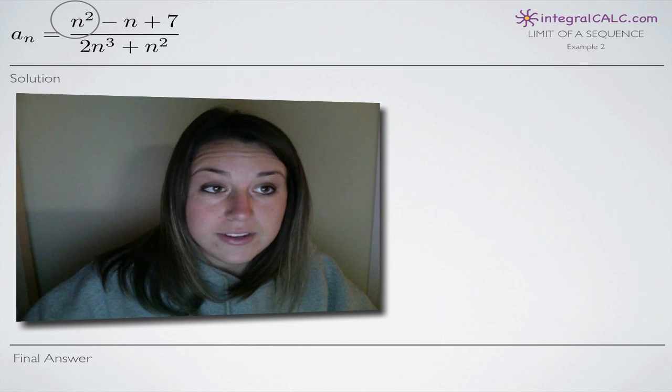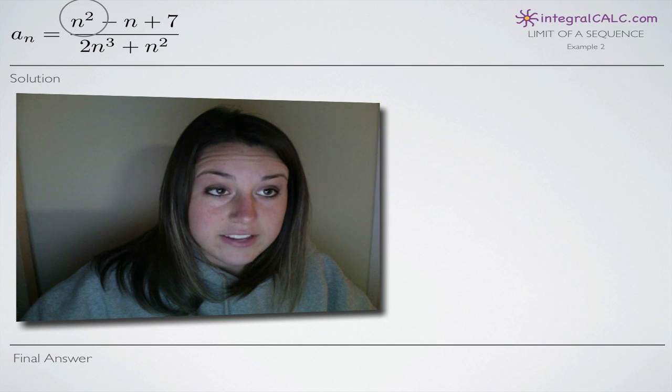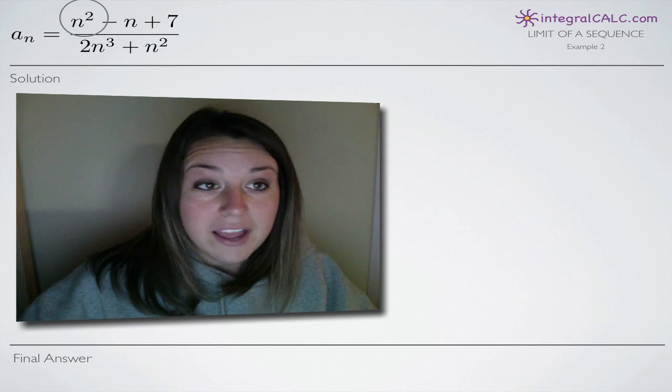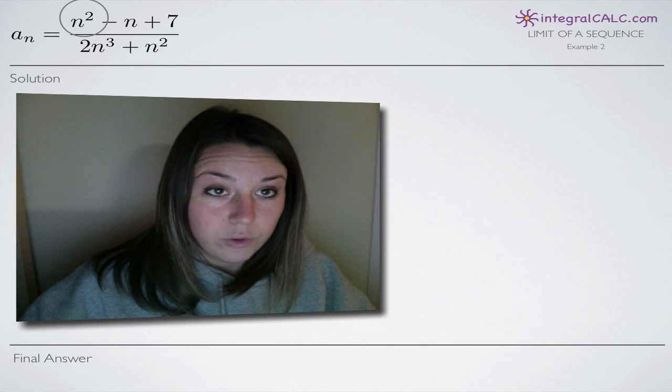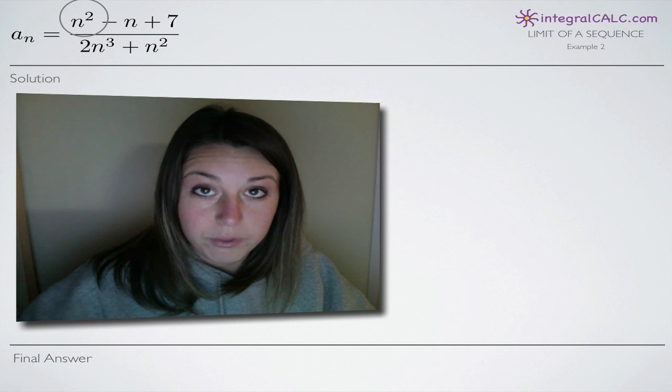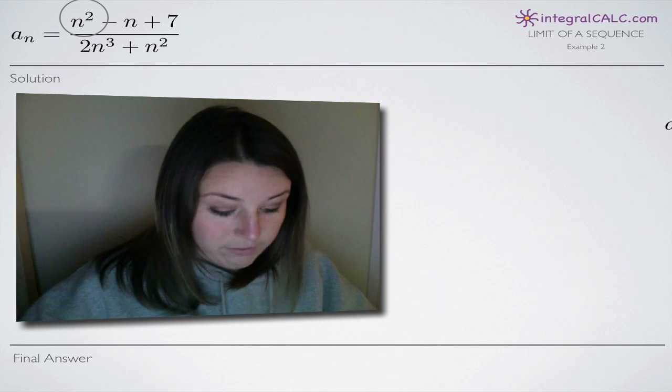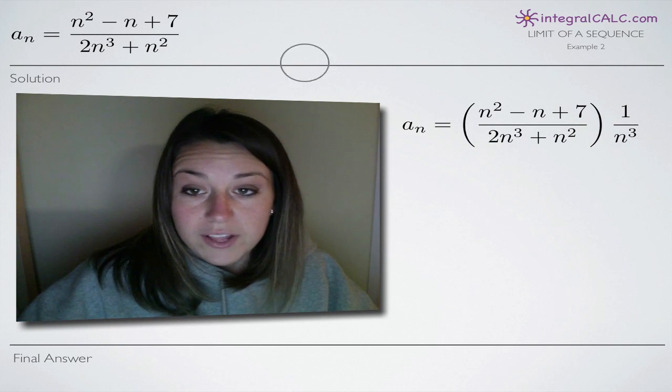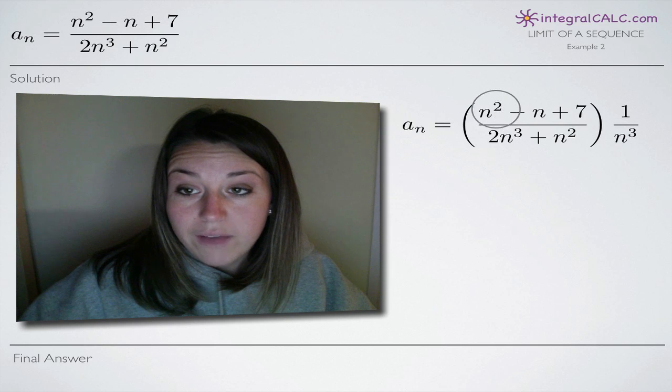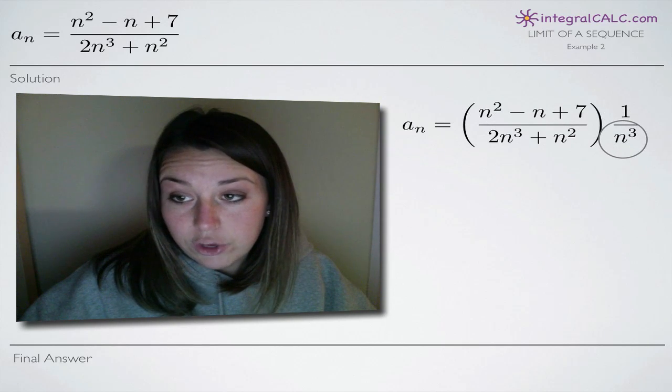That's what we're going for and the reason is because we're finding the limit of this sequence as n approaches infinity and we'll talk in a second about why we need to plug infinity into the denominator instead of the numerator. So like I said, we're going to divide through every single term in this fraction by n cubed.